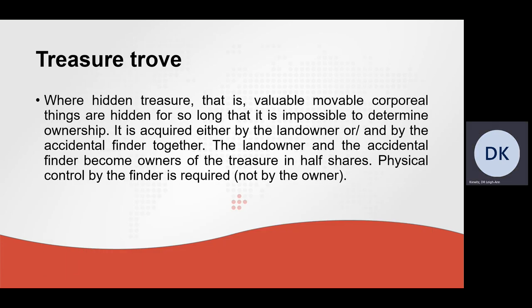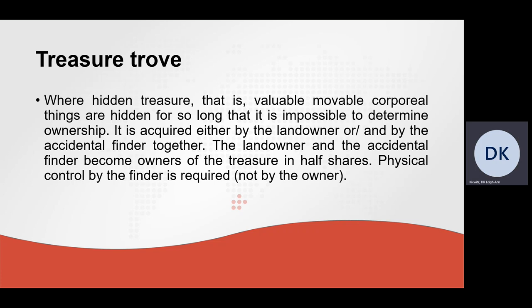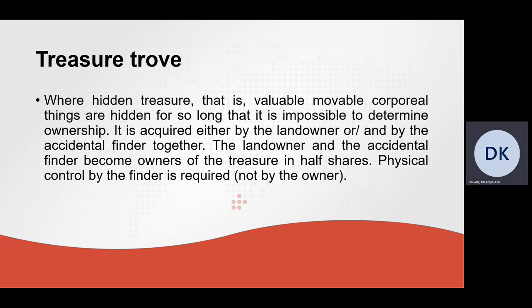Another example of original acquisition of ownership is treasure trove. When there is hidden treasure — valuable, movable, corporeal things hidden for so long that it is impossible to determine ownership — the hidden treasure is acquired either by the landowner or by the accidental finder, or both together. The landowner and the accidental finder will become owners of the treasure in equal half shares. Physical control by the finder is required, but not by the owner of the land.